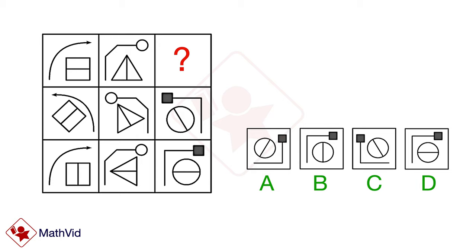Look at the arrows in each row. They always point in the same direction, right? But the shape below the arrows rotate 45 degrees clockwise in each column.